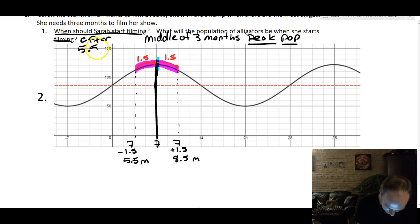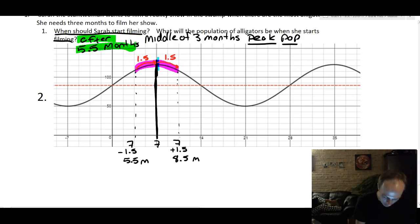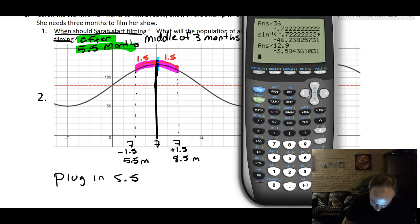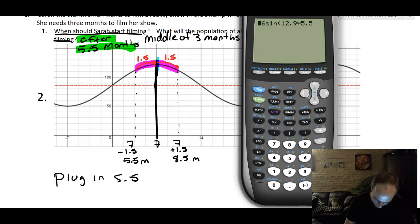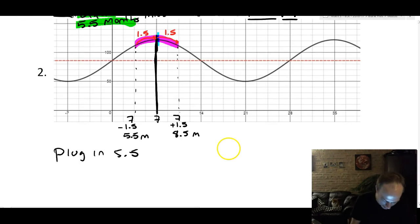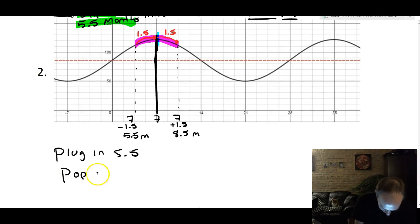To find the population when Sarah starts filming, plug x = 5.5 into the equation: 36·sin(12.9 × 5.5) + 86 ≈ 120.02. Rounding to the nearest alligator, the population will be approximately 120 alligators when she starts filming.